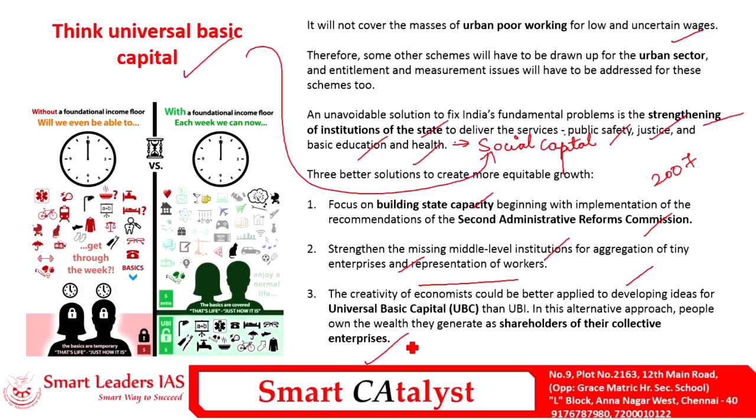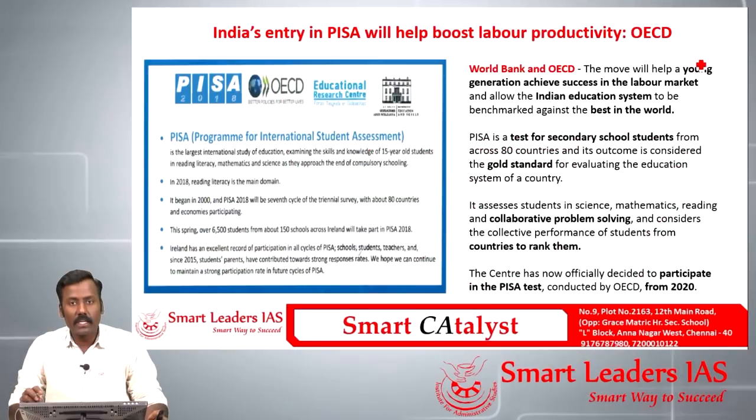Income inequality mainly exists between blue collar and white collar workers. We need to strengthen middle-level institutions to aggregate the grievances of tiny enterprises. By focusing on UBC rather than UBI, the government provides citizens the chance to be decision makers for their collective enterprises, and the government's role is to build a positive choice architecture, nudging the public to make right decisions even in dire circumstances.